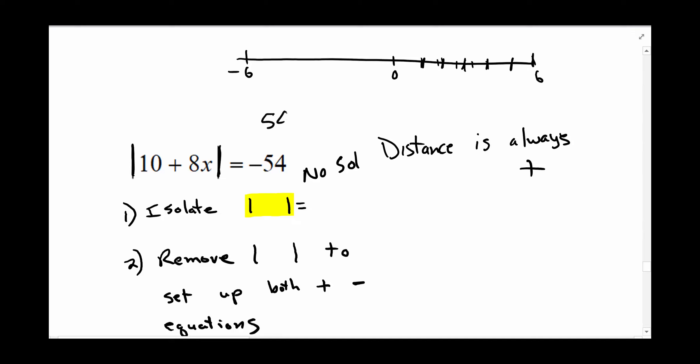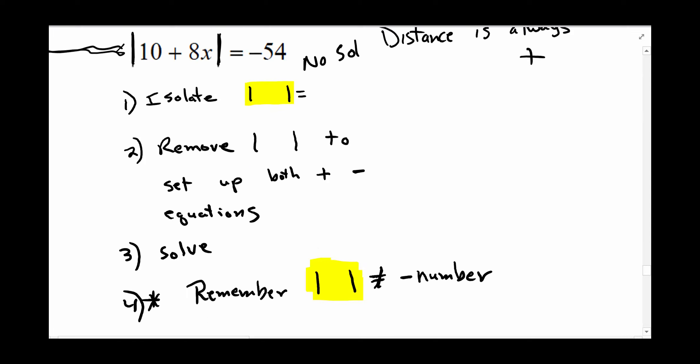Now it could be equal to 54. If that were equal to 54, you would then remove the absolute value and you would set it equal to 54 and negative 54. Those would be your two equations. But when the absolute value is equal to a negative number and there's nothing on the outside to simplify first, then you can just write no solution.